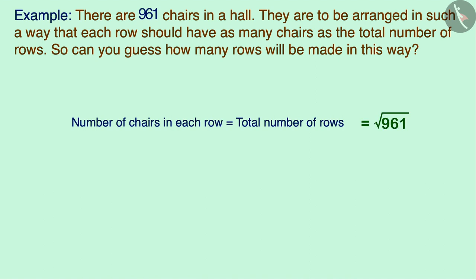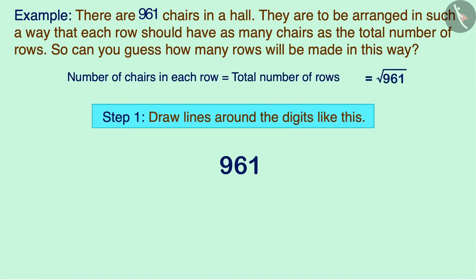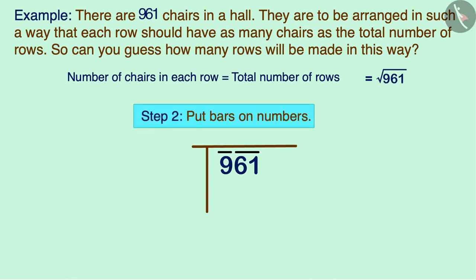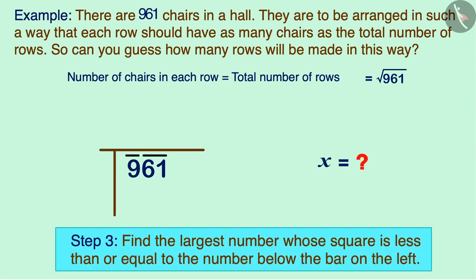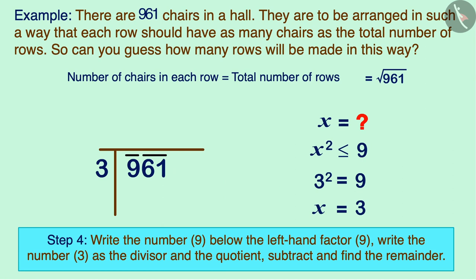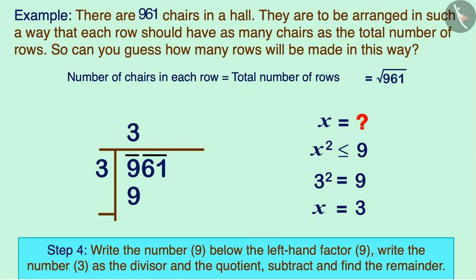First of all we will draw lines around the number 961 and then put bars on it. The number of digits in this number is odd, so there will be only one digit below the leftmost bar. Now we will find a number whose square is equal to or smaller than 9 — the number below the leftmost bar. That number is 3. So 3 is the divisor and also the first digit of the quotient. Write 9 below the first number and subtract.